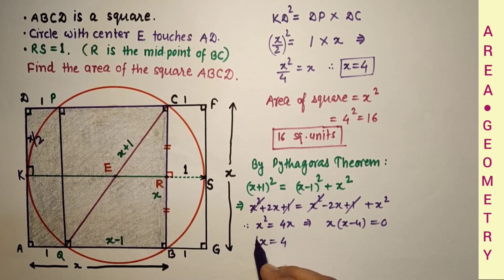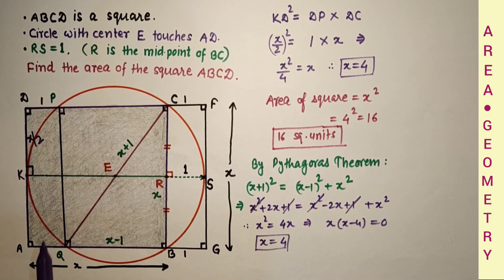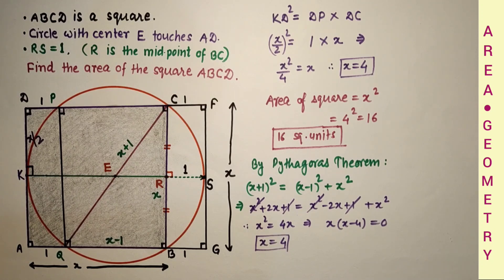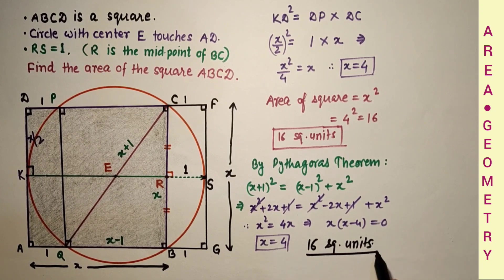Once again, area of this square is side square, which is X square, that means 4 square. So the required answer is 16 square units. That is the answer.